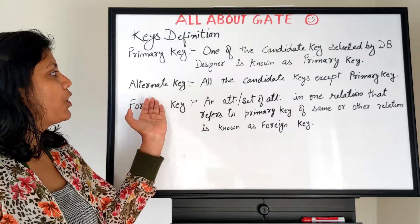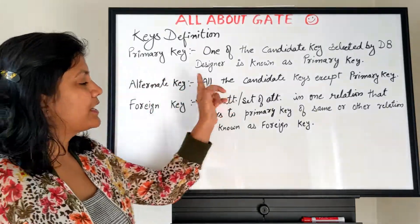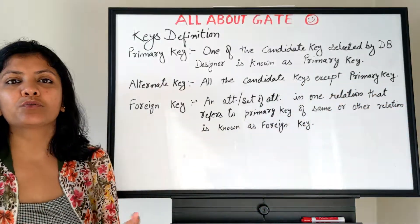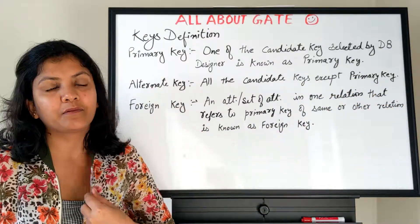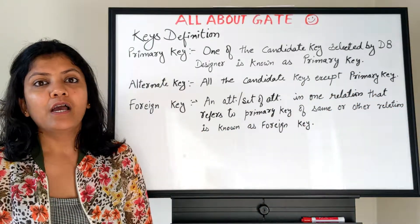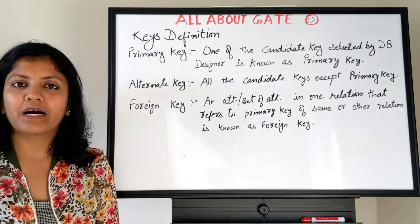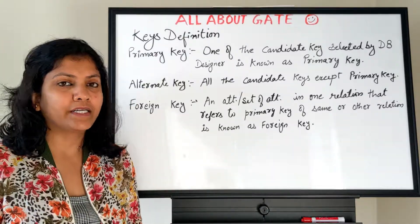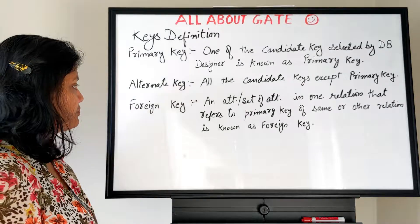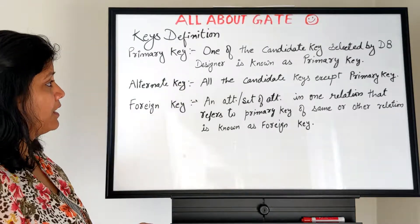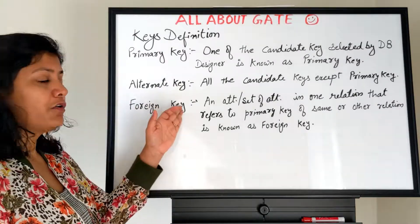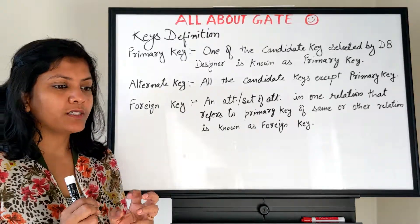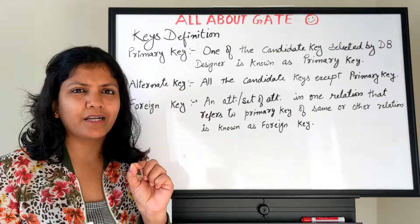One candidate key becomes the primary key. Every other candidate key except the primary key becomes an alternate key — all candidate keys not selected by the database designer as the primary key remain as alternate keys. Next comes the foreign key concept, which is a little complex but not difficult.